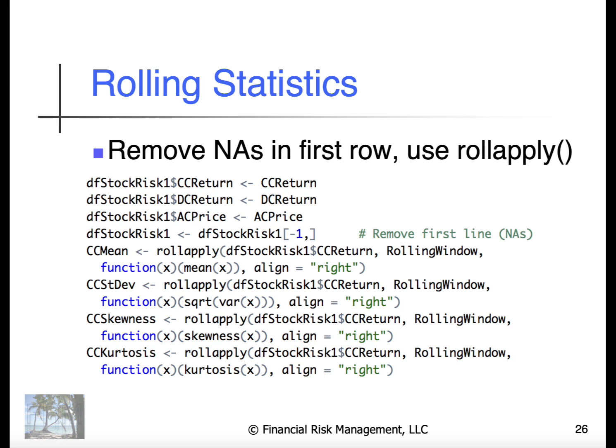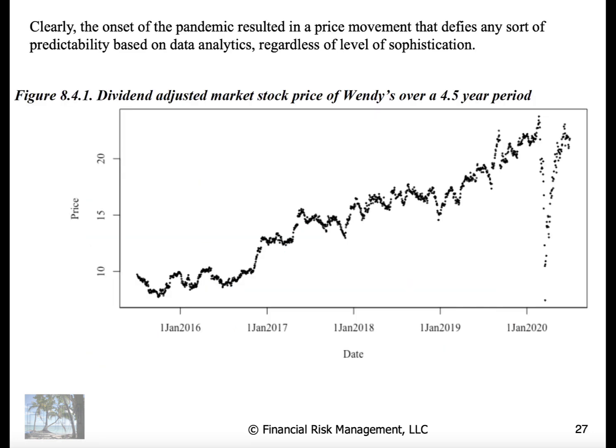But once you look at rolling statistics, you realize these things move around a lot. Just by way of an example, this is the dividend adjusted stock price for Wendy's, the hamburger company, over a four and a half year period.